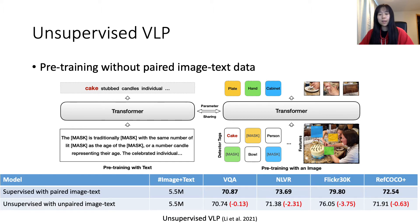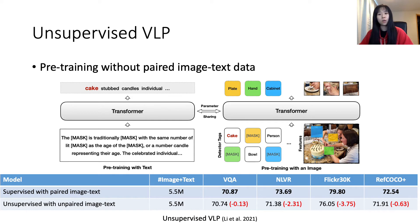The design of unsupervised VLP renders slightly worse performance than the fully supervised counterpart. However, there is still room to improve — for example, to leverage the excessive amount of data on the web, much more than the 5.5 million used in this work.